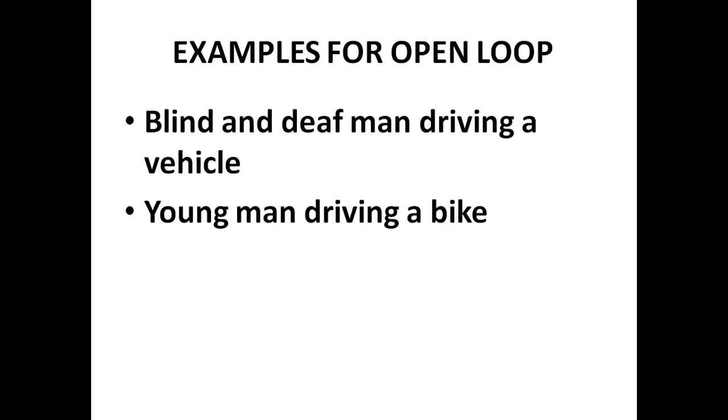Examples for open loop system. A blind and deaf man driving a vehicle, you have given him some set speed, but he does not follow. A young man driving a bike, the father gives a set speed, but he does not follow that reference speed.